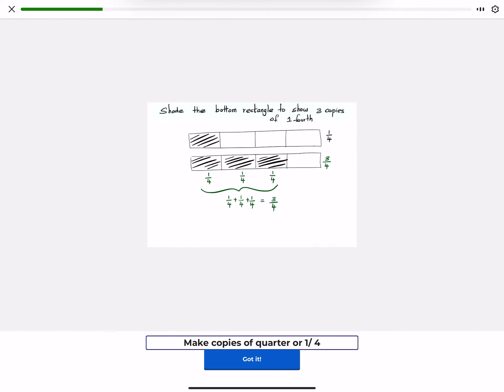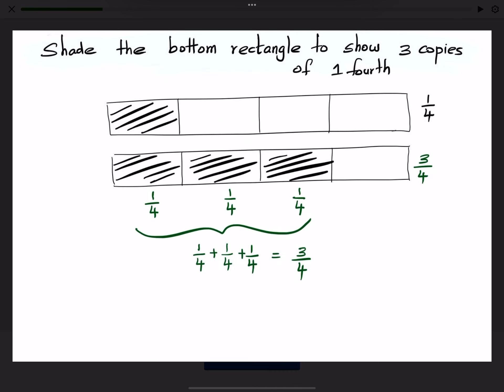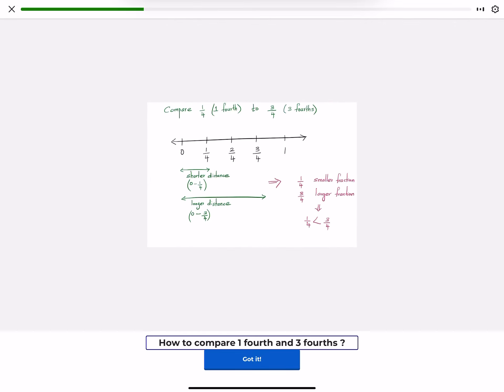Make copies of quarter or 1/4. How to compare 1 fourth and 3 fourths?